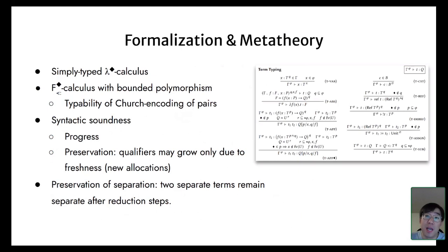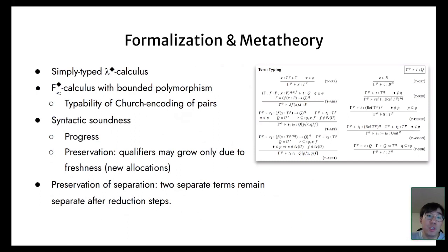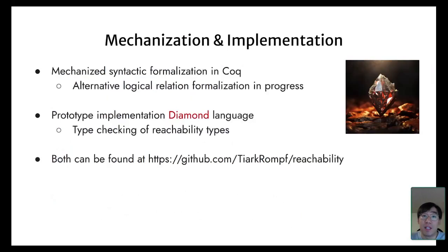We have formalized our system with a simply typed version and also a version with bounded polymorphism in the style of F-sub. We have also shown the typeability of Church encoding of pairs with reachability qualifiers in our system called F-diamond. We have proved syntactic soundness using progress and preservation. Preservation also shows that qualifier sets may grow only because of new allocations. An important corollary is the preservation of separation, meaning that two separate terms remain separate during evaluation. Our proofs are mechanized in Coq, and there is ongoing effort mechanizing our systems using logical relations, which allows us to prove stronger properties. There is also a prototype implementation called the Diamond language.